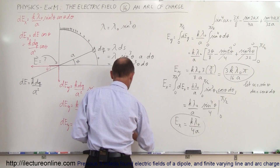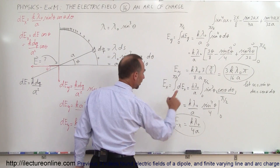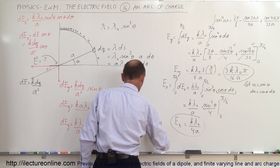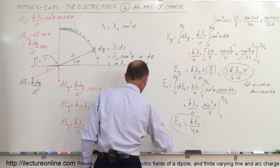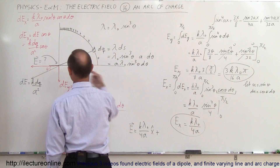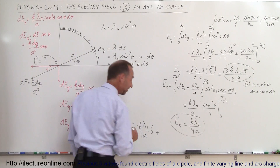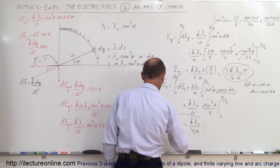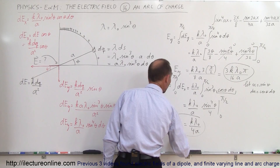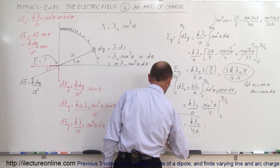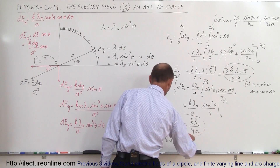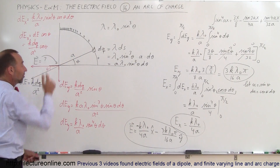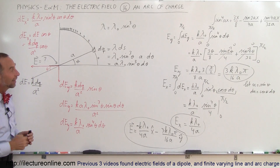The electric field can now be written as the vector sum of its components. Since the x direction is negative and the y direction is also negative as drawn, the final electric field is E = −(k·λ₀/(4a))·x̂ − (3k·λ₀·π/(16a))·ŷ. That is the electric field caused by this arc of charge with the varying charge density λ = λ₀·sin³(θ), and that's how we do it.